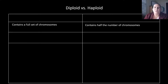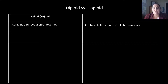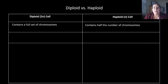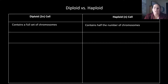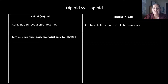This brings us to terminology: diploid versus haploid. Diploid is represented by 2N, and this is a cell that contains a full set of chromosomes. Haploid cells are represented with just N and they contain half the number of chromosomes — if you take 2N and divide it by two, you get N. Diploid cells are your stem cells that produce body or somatic cells, and they do this through the process of mitosis.